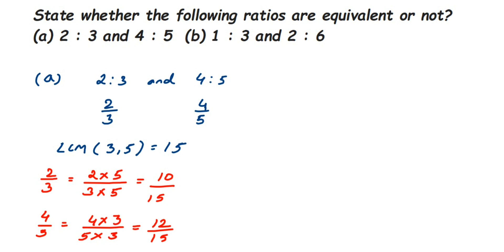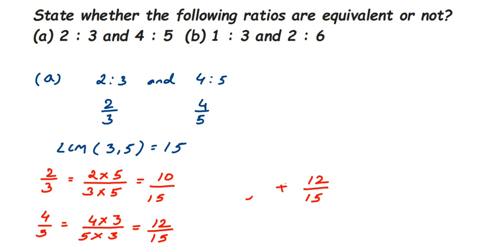Now we compare — we got the same denominator, so we compare the numerators. As you learned in earlier classes, when comparing fractions or rational numbers, you make the denominator the same by taking LCM, then compare the numerators. We have 10/15 and 12/15. They are not equal, so 2 is to 3 is not equivalent to 4 is to 5. They are not equivalent.